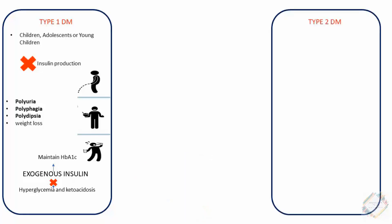Type 2 Diabetes Mellitus is the most common type of diabetes — 90 percent of people with diabetes have Type 2. The factors contributing to its development include genetic factors, aging, obesity, and peripheral insulin resistance. Peripheral insulin resistance is the failure of target tissues to increase glucose disposal in response to insulin. Type 2 Diabetes Mellitus causes only milder metabolic alterations.